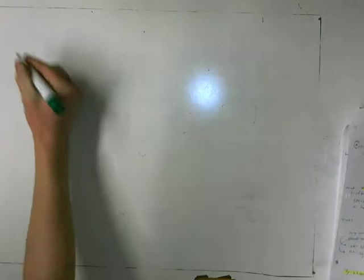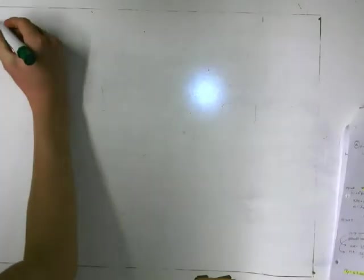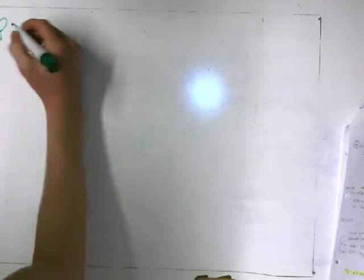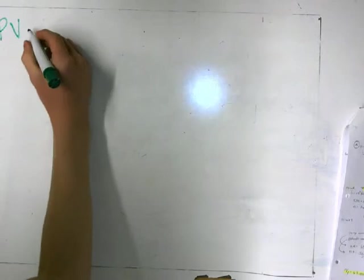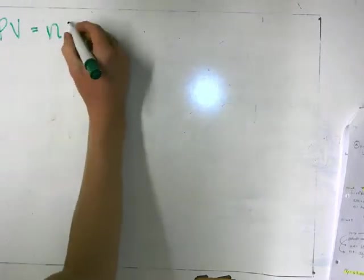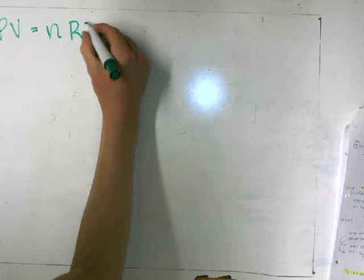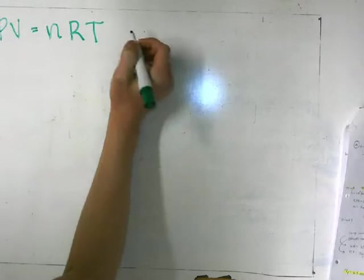The ideal gas law, as many of you probably know, is pressure times volume is equal to the number of moles of gas times the ideal gas constant times the temperature, or PV equals NRT.